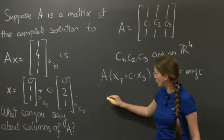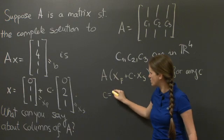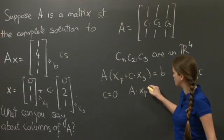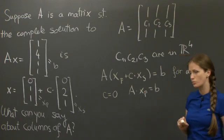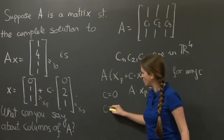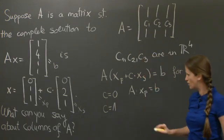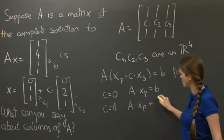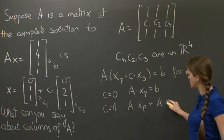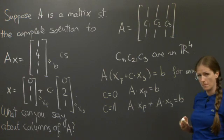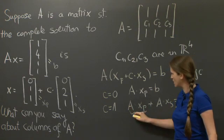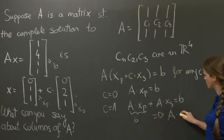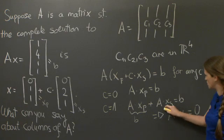I will call this vector B for any number C. In particular, what I'm going to conclude is that when C equals 0, we get A times xp equals B. But also that when C equals 1, we get A times xp plus A times xs equals B. Replacing this by B, we get that this implies that A times xs equals 0.